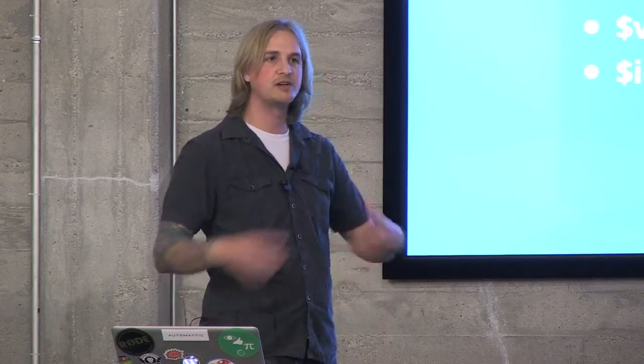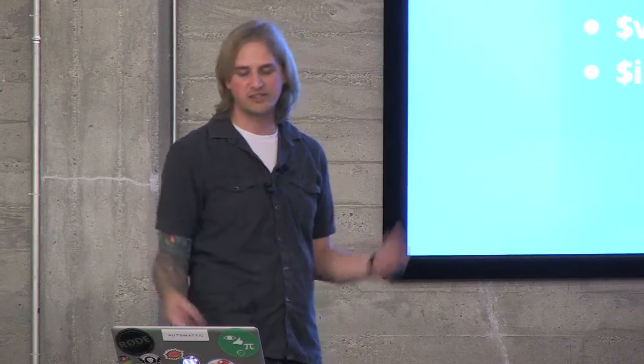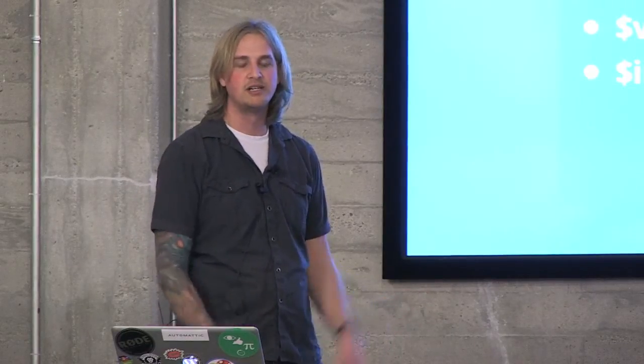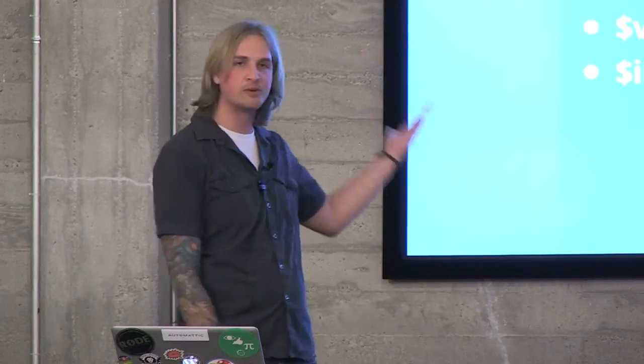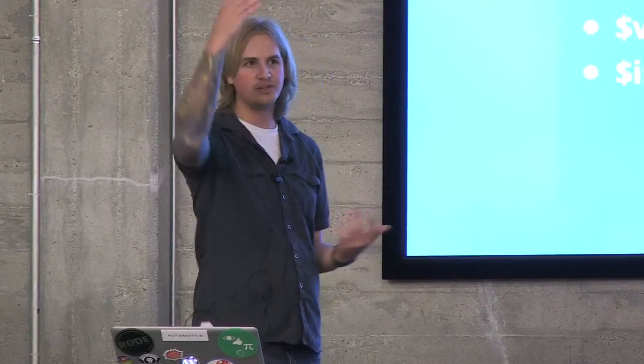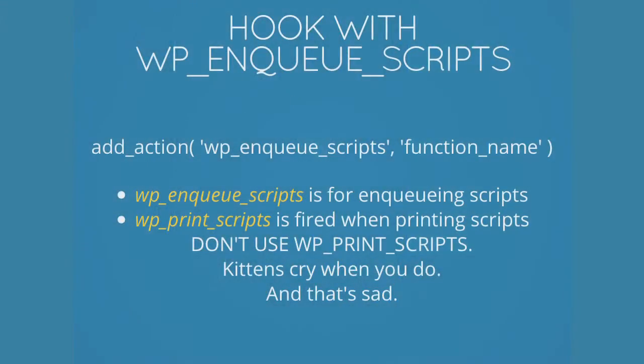The next parameter is version, which literally just appends a version number onto your script. It's a way of doing caching — you can change that number and it will refresh the cache. If you don't fill it in, it puts in the current WordPress version number, so in my instance it would be 3.7. And the last is in_footer, which says you want to load this script in the footer of your theme — by default it loads in the head. The last part is actually telling WordPress you want to load this script in with your theme.